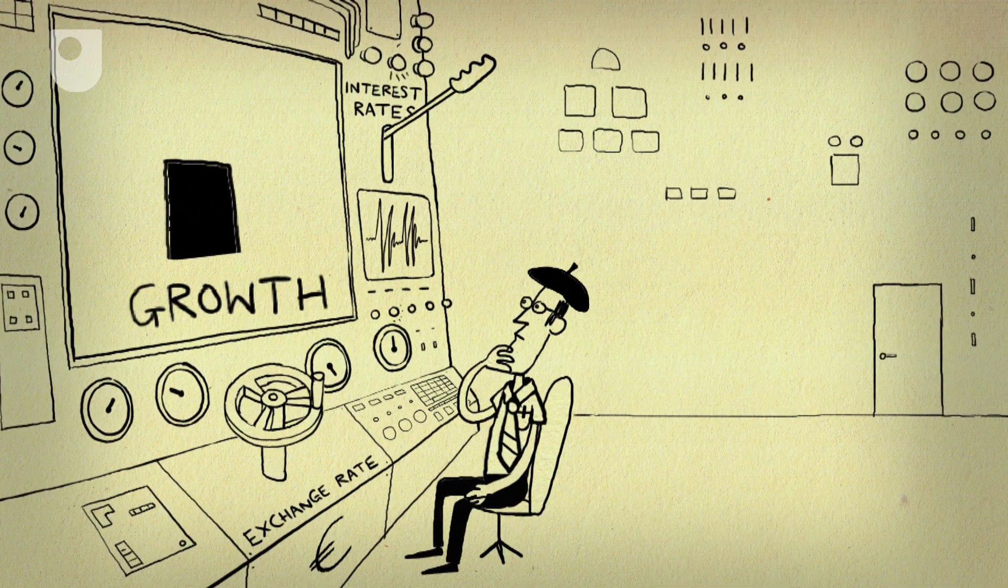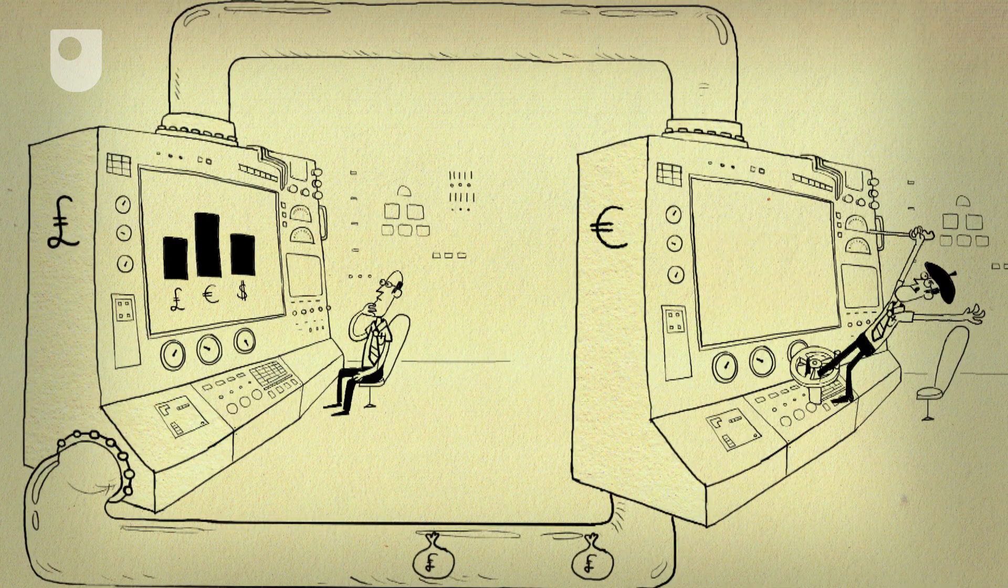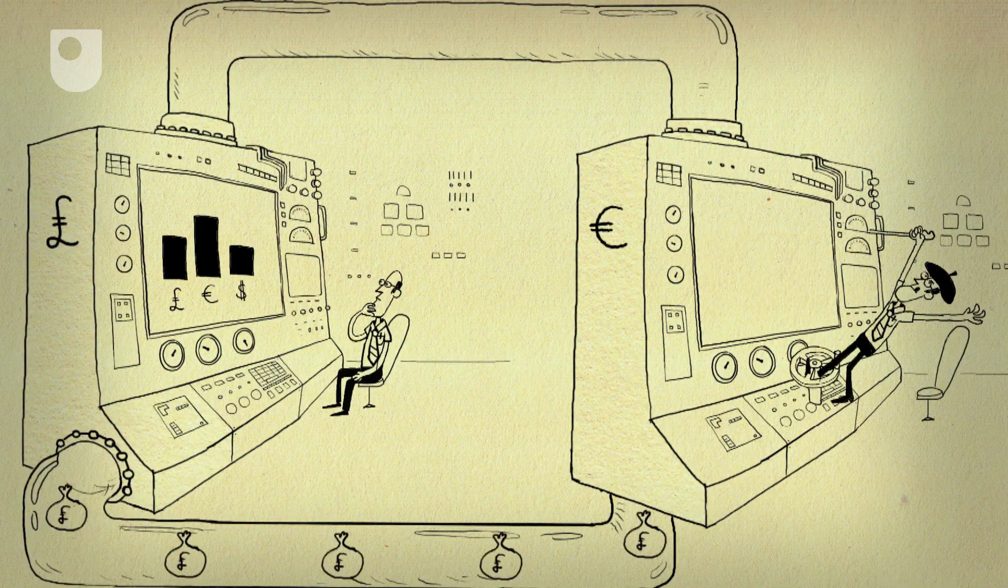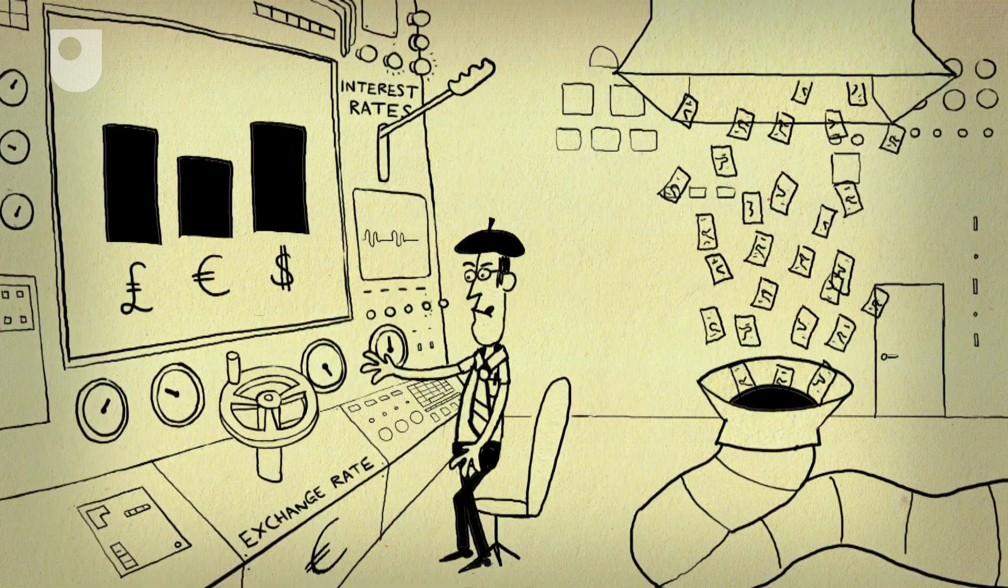But there's a problem when you try to do all of these at once. Say, for example, the Eurozone tries to lower its interest rate and reduce unemployment. Money flows out to earn higher interest rates elsewhere. Exchange rates drop, which causes inflation, so the Euro interest rate is forced back up again.